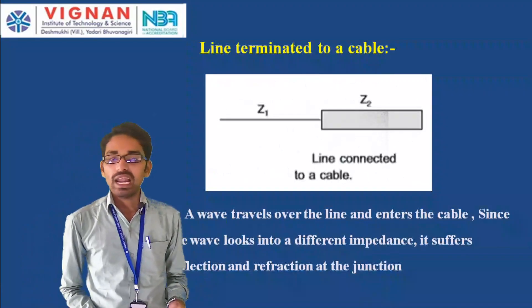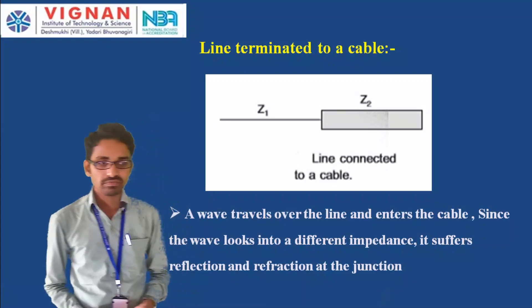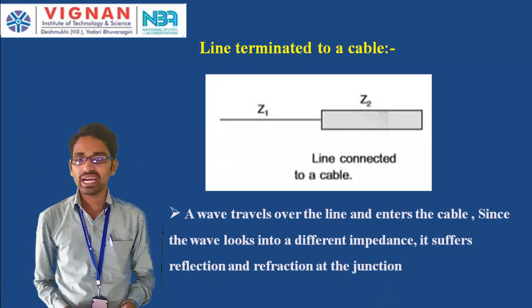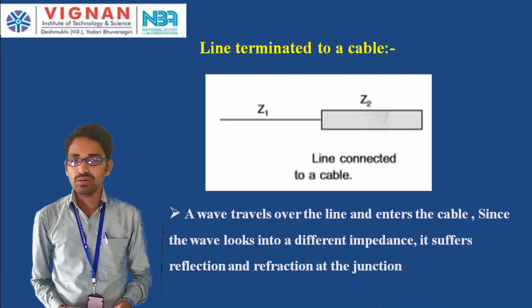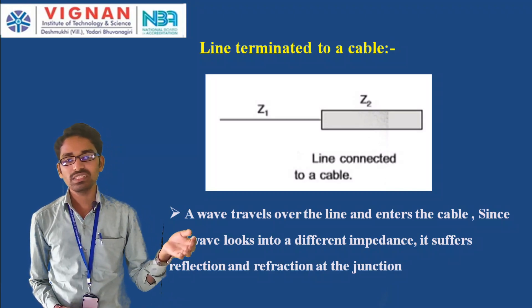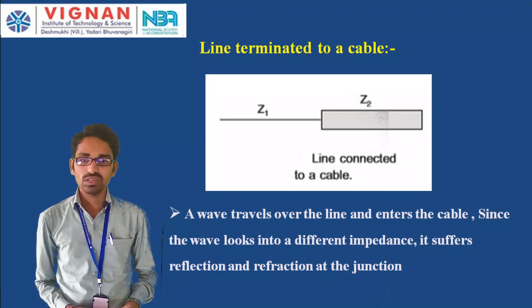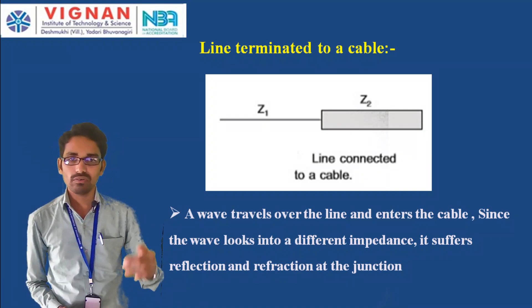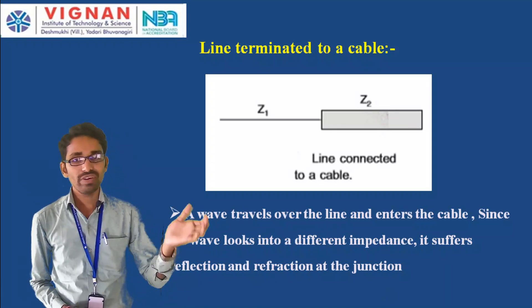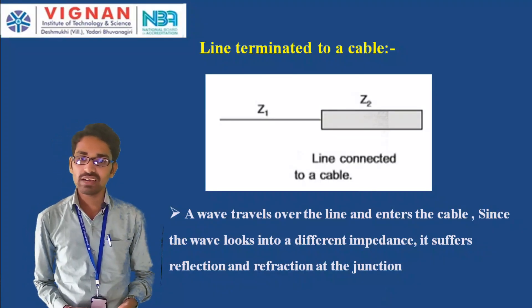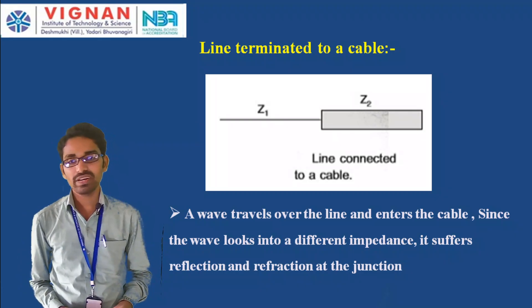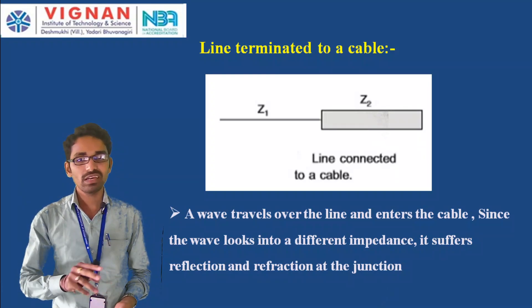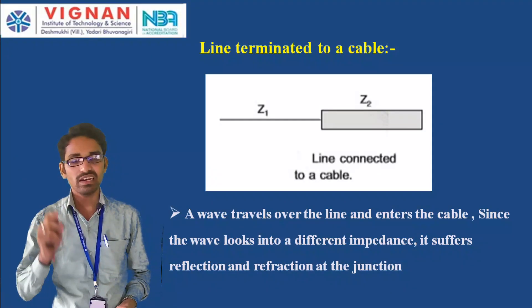The next topic is line terminated to a cable — connecting an overhead line to an underground cable. When the traveling wave on the overhead line enters the cable, it encounters a different impedance because the cable has significant capacitance, resulting in a different surge impedance. Because of this impedance mismatch, the wave suffers reflection and refraction at the junction where the overhead line connects to the underground cable.